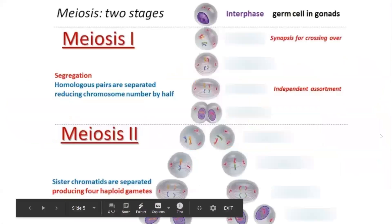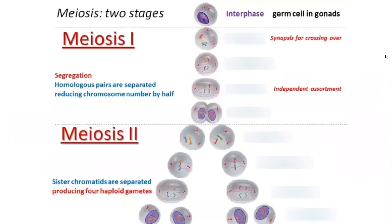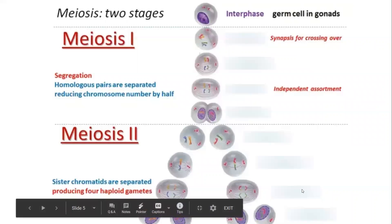Comparing that to meiosis, meiosis is wildly more complicated. We have two main parts: meiosis 1 and meiosis 2. In every part of meiosis there's a prophase, metaphase, anaphase, and telophase. After our original cell is in interphase, we have prophase 1, metaphase 1, anaphase 1, telophase 1, and then cytokinesis 1. Then after that, we have prophase 2, metaphase 2, anaphase 2, and finally telophase 2 and cytokinesis 2.